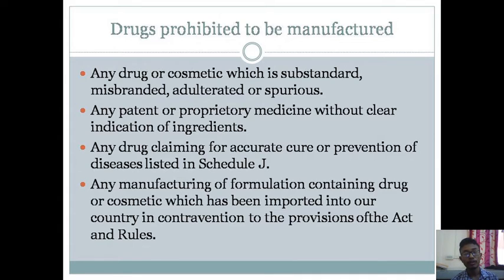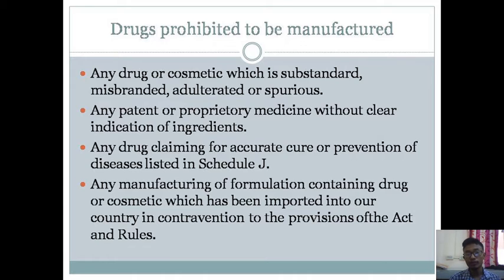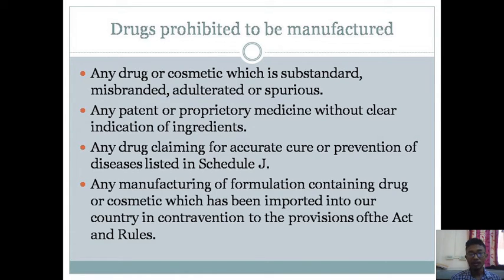Next is any drug claiming accurate cure or prevention of diseases listed in Schedule J. There are certain diseases whose cure has not been found to date. If any manufacturer or person claims to cure diseases mentioned in Schedule J without any proof, safety data sheet, or original data sheet, they cannot get a license for manufacturing.